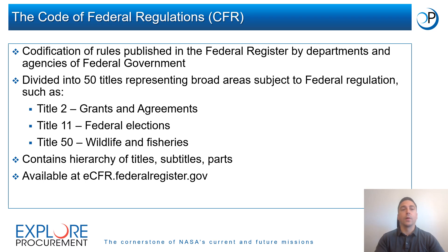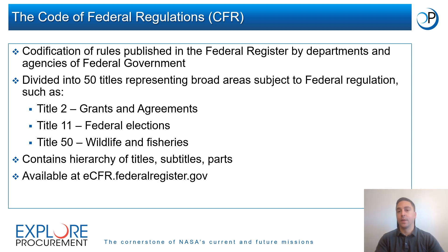The Code of Federal Regulations, or CFR, is a codification of the general and permanent rules published in the Federal Register by the departments and agencies of the federal government. It is divided into 50 titles that represent broad areas subject to federal regulation. For example, Title 11 pertains to federal elections, Title 50 deals with wildlife and fisheries, and Title 2, the subject of this training, pertains to grants and cooperative agreements.